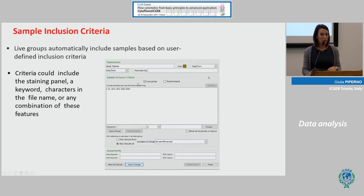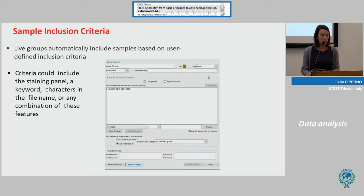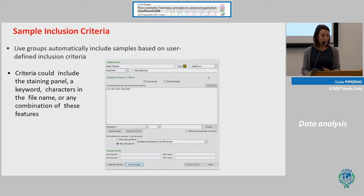Groups are also called 'live groups' because you can include criteria for your samples. For example, these samples were analyzed using different colors: live/dead, CD4, CD3, CD8, and B220. This criteria can include the staining panel and also different keywords that you can add.